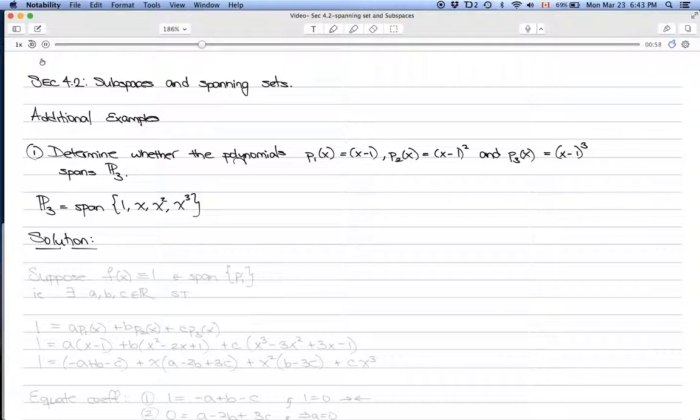We want to show that every vector 1, x, x², and x³ can be written as a linear combination of the pi's. The constant function 1 in particular should be in the span of these three vectors. Let's suppose that the constant function f(x), which is identically equal to 1, is in the span of the pi's.